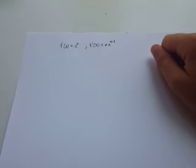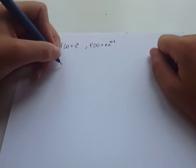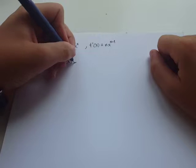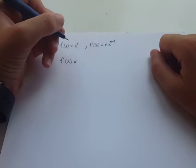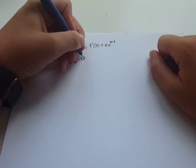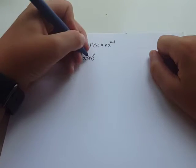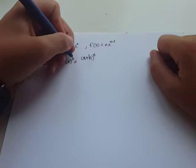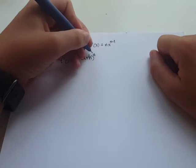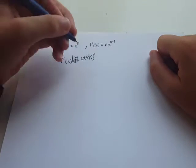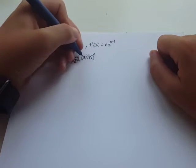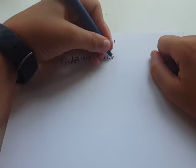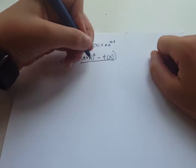So let's look at the derivative of f of x, the definition of a derivative. So f prime of x will equal the limit as h approaches 0 of x plus h to the n minus f of x over h.